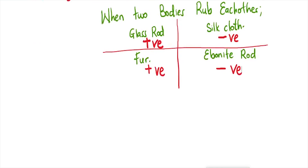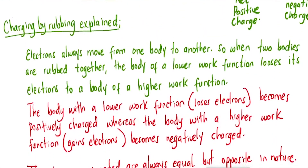Please take note that when we talk about work function, we are talking about the minimum energy required to remove an electron from the surface of a body. A body that has a lower work function means that an electron will be able to leave the surface more easily. We shall explore more about work function when we cover the photoelectric effect.